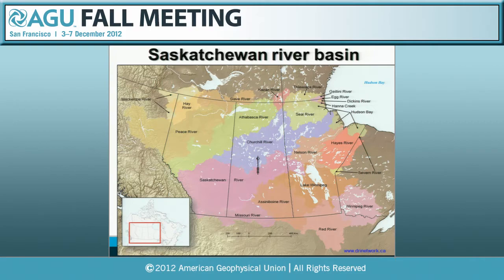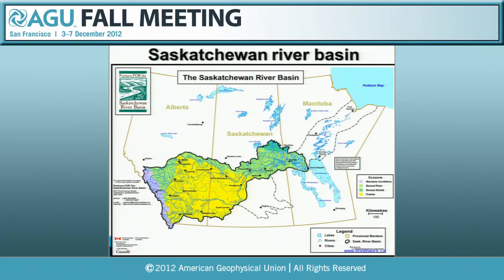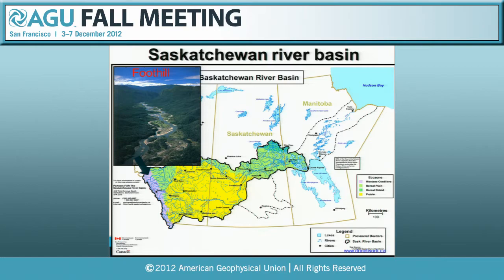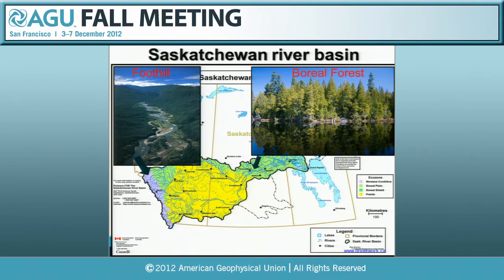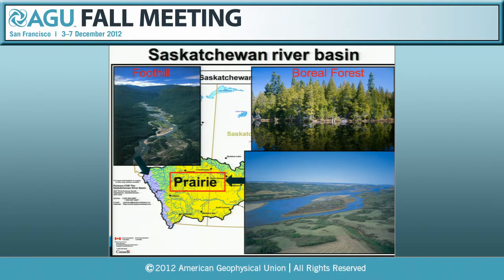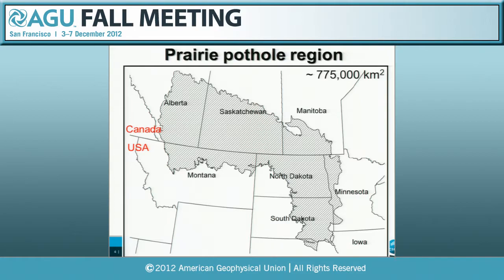Canada is by far no different from other countries, and different river basins in Canada have undergone a lot of changes over the last century. The Saskatchewan River Basin is one of the largest and most important river basins in Canada, covering three prairie provinces — starting from Alberta, in the foothill of the Canadian Rockies, all the way to Lake Manitoba — through the beautiful boreal forest. The major area is covered within the Canadian prairies, an area of about 775,000 square kilometers.